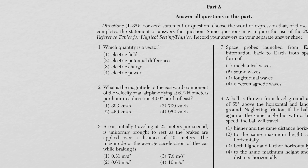Question one asks which of the given quantities is a vector. You need to know what a vector and a scalar are — a vector has magnitude and direction, while a scalar has magnitude only. The answer is choice one: all fields — gravitational, electric, magnetic — have direction.